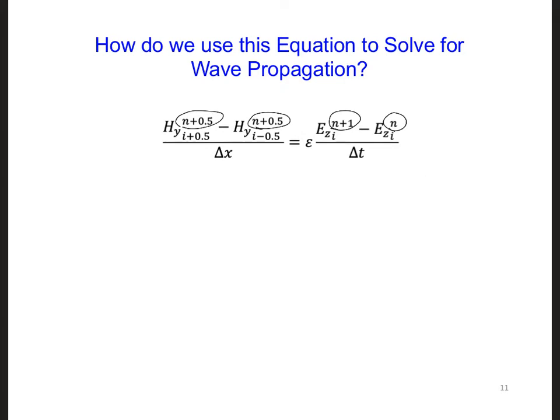In other words, Ez at n+1 is the component that's farthest out into the future. So if we solve for this term, we may be able to predict the values of Ez at time step n+1 using previous values of Ez and Hy that should be stored in the computer. Let's see if this is true.